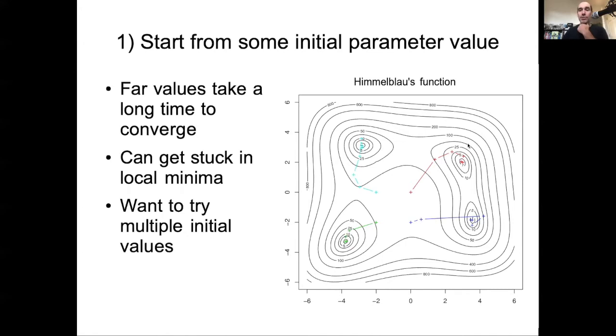So first part, starting from some initial parameter value. Worth noting that if you are proposing parameter values that are really far away from the optimum, it's going to take a lot longer for your algorithm to converge or find the best solution. So what you want to do is start it in the right ballpark, but at the same time, you don't want to manually spend forever trying to numerically optimize something that a computer can numerically optimize far faster than you can.